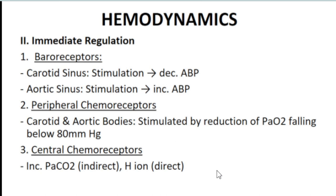Peripheral chemoreceptors detect decreases in blood oxygen level — if oxygen falls below 80 mmHg, they are activated. Central chemoreceptors monitor the level of carbon dioxide and hydrogen ions in the blood.